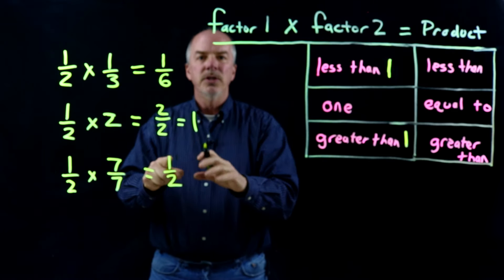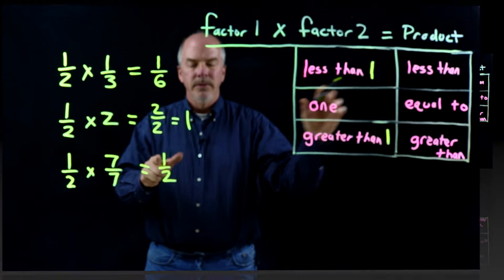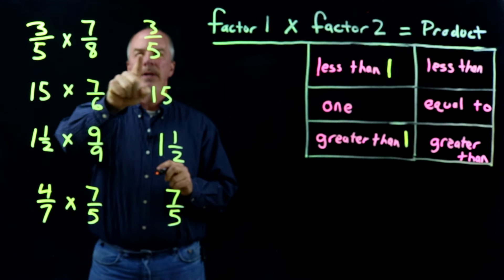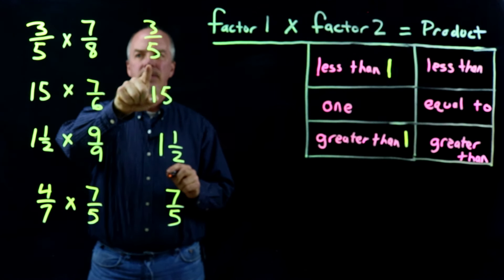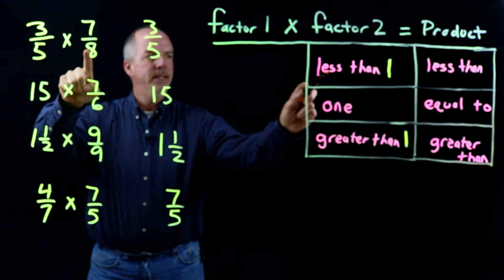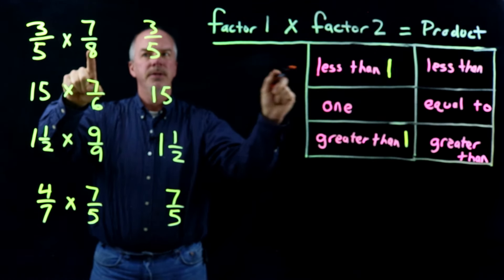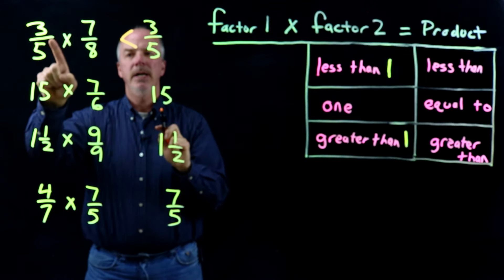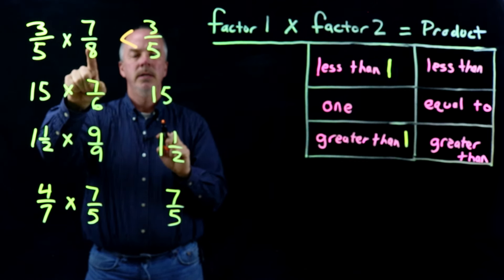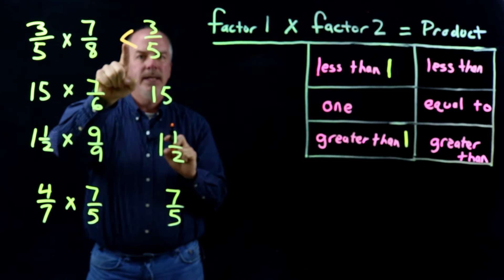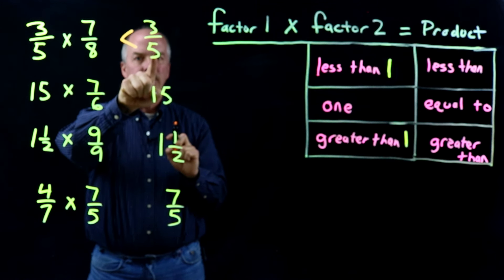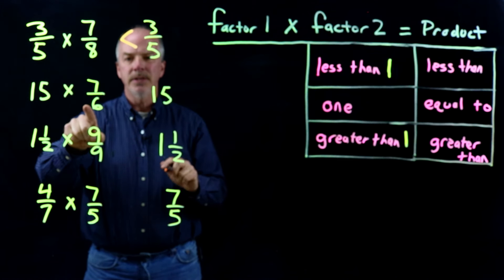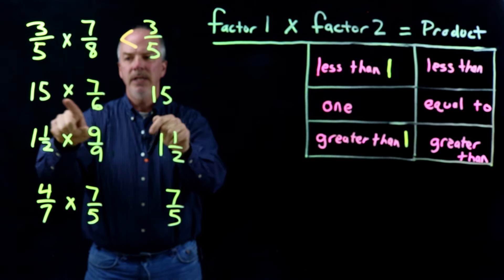Now these next ones we're not going to calculate — we're just going to know what our answers will be. 3 fifths times 7 eighths: I want to know what happens to 3 fifths. Well, 7 eighths is less than 1, so I'm going to have a product that is less than 3 fifths. If I multiply 3 fifths by something that is less than 1, then my product will be less than what I started with — less than 3 fifths.